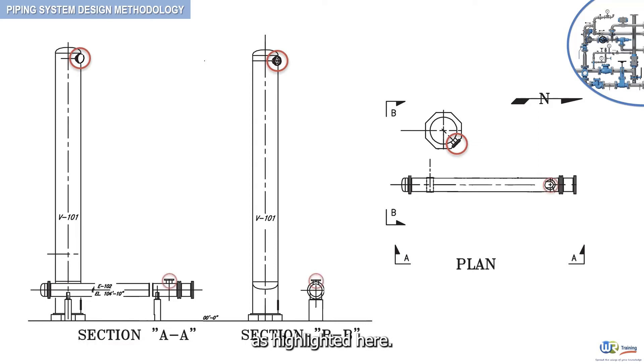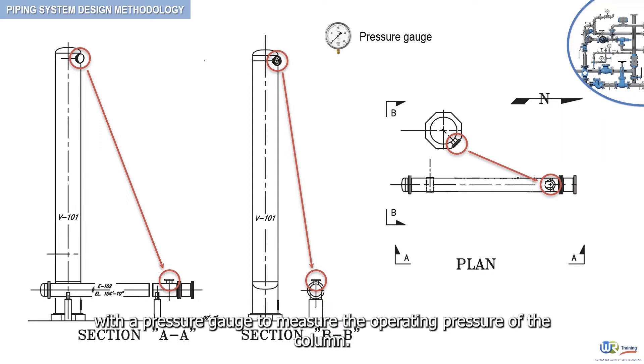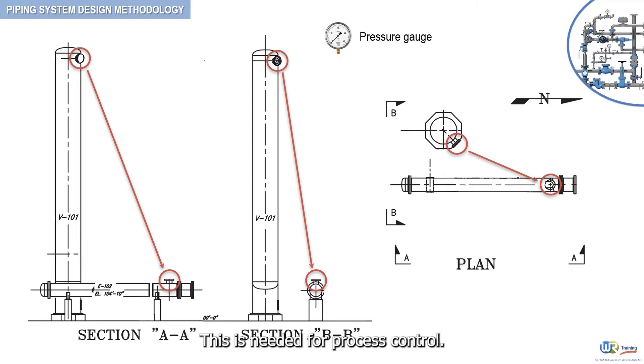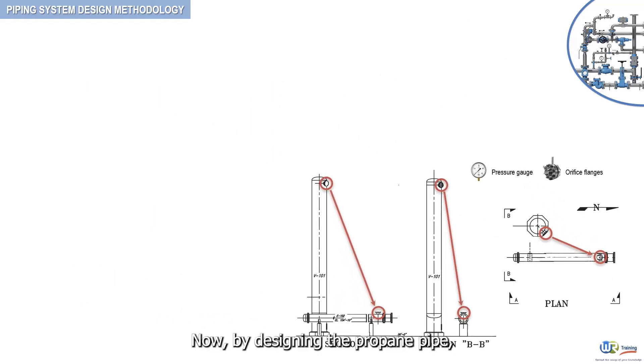In addition, the pipe should be equipped with a pressure gauge to measure the operating pressure of the column. This is needed for process control. A flow orifice must be incorporated to measure the flow rate of propane exiting the column. This is needed for material and energy balance purposes.